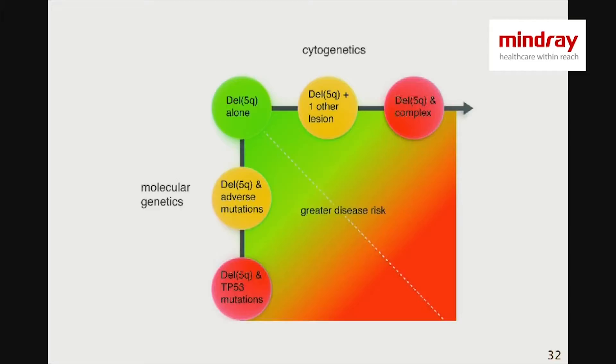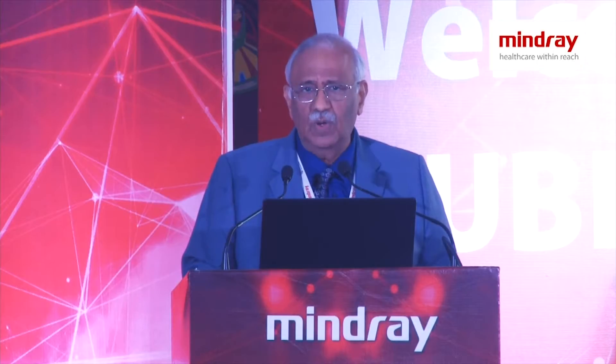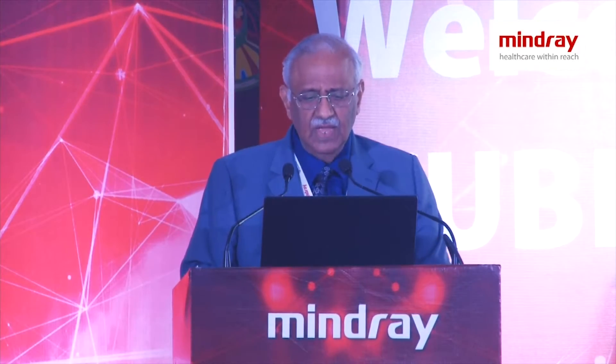At the left bottom, 5Q- associated with TP53 mutation is also poor prognosis. This gives you an explanation for why almost one-third of 5Q- patients do not respond to medical treatment. As shown in the red curve, TP53-mutated patients have a relatively poor prognosis.